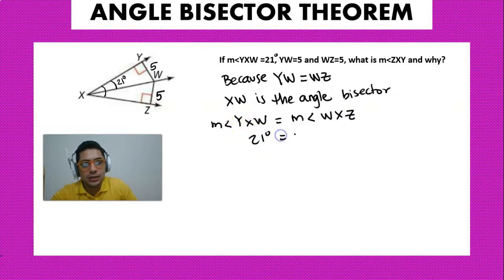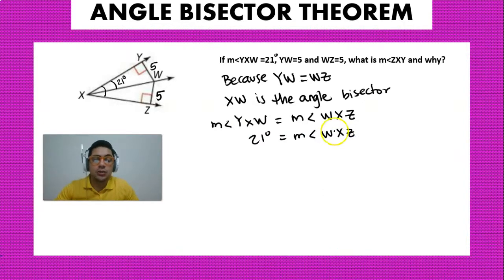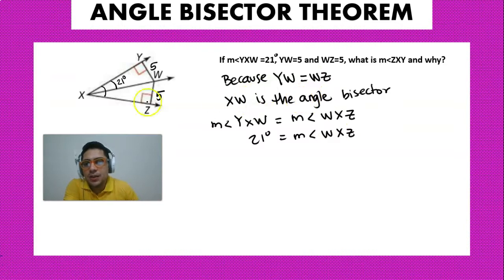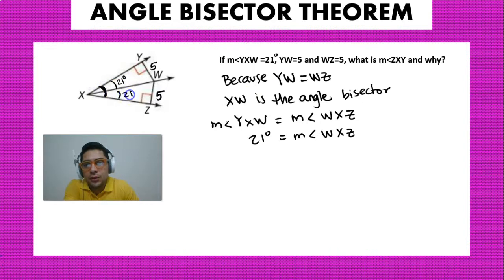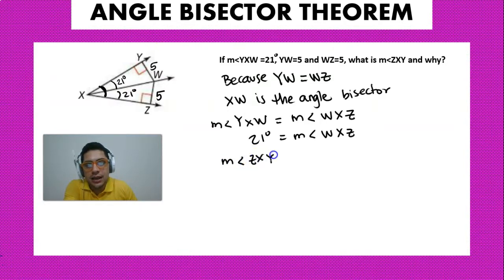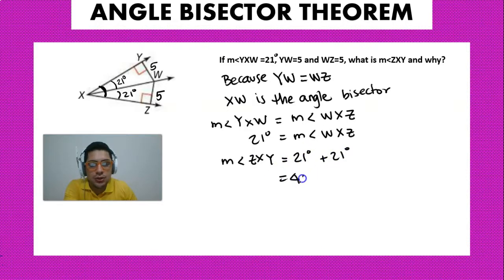So if angle YXW is 21 degrees, then angle WXZ is also 21 degrees. But they are asking for the big angle — angle ZXY. Since both smaller angles are 21 degrees, the total angle ZXY is going to be double: 21 plus 21, which equals 42 degrees.